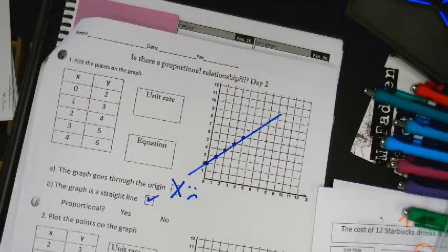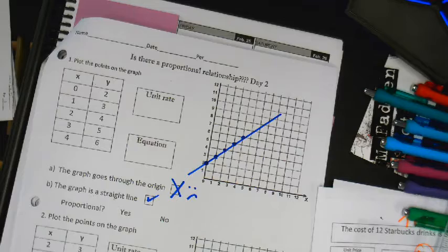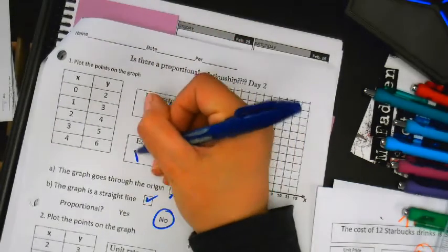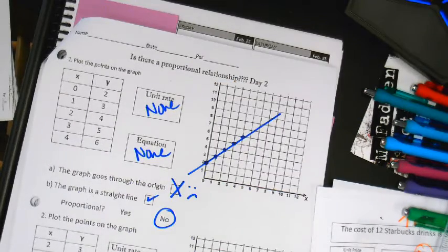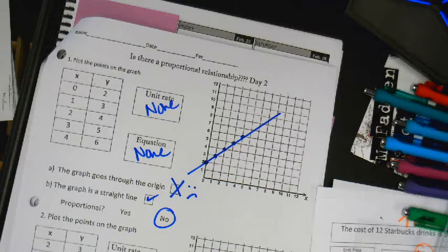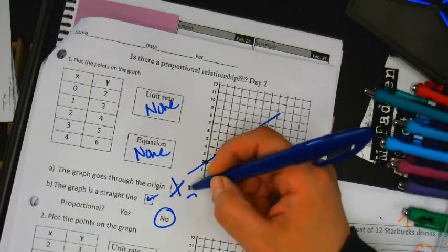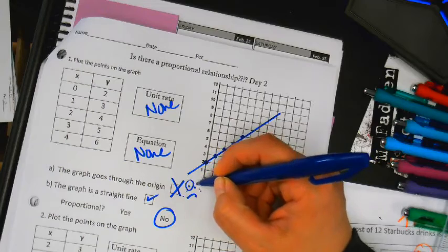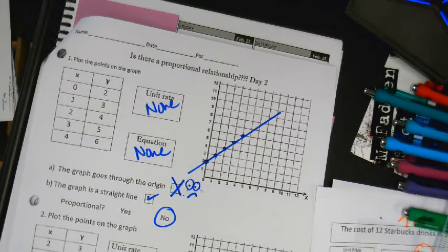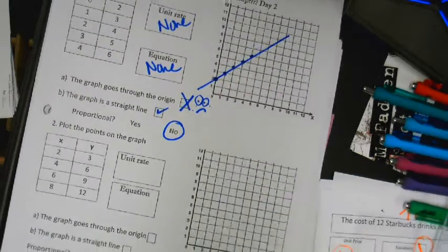So, immediately, is it proportional or not? No. Nope. So, there's no unit rate, and there's no equation. It just takes one thing to ruin everything. One little thing. That's it. We're done. None. None. N-O-N-E. None.